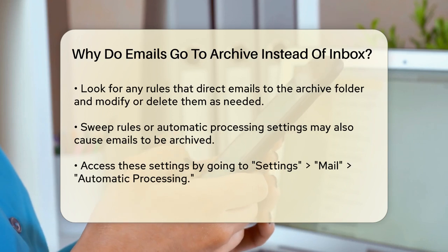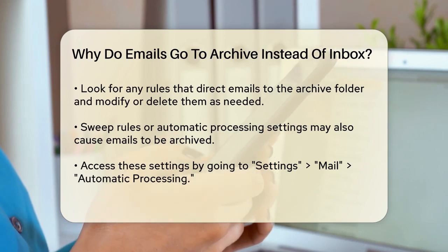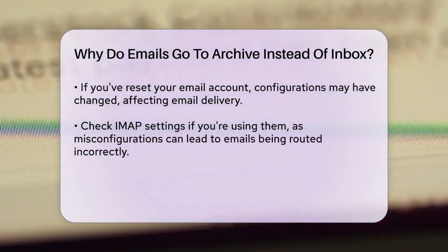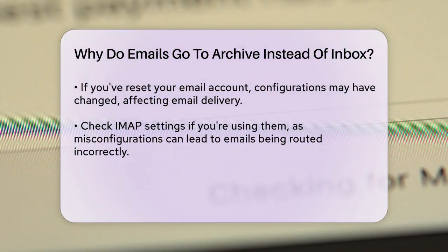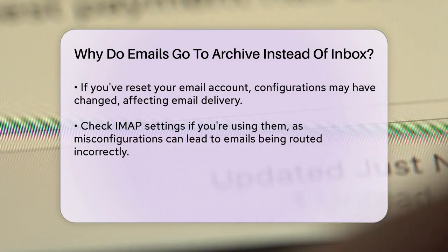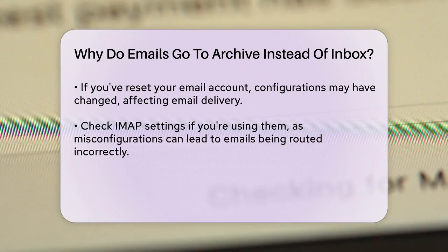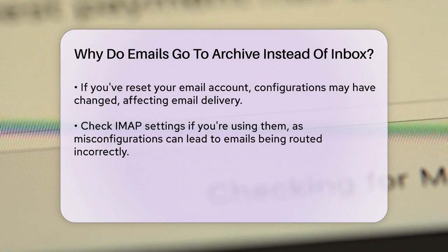If you've recently set up or reset your email account, especially after a password reset or a system reinstall, the configuration might have been altered. For instance, if you're using IMAP settings, there could be a misconfiguration that's routing emails to the Archive folder. You need to check the mail settings of your account in Outlook by going to File, Account Settings, Account Settings, and then double-click on your account to adjust the settings accordingly.